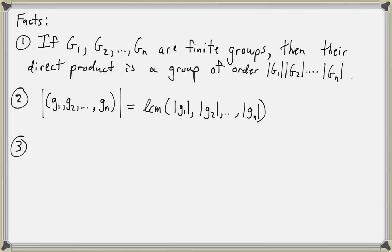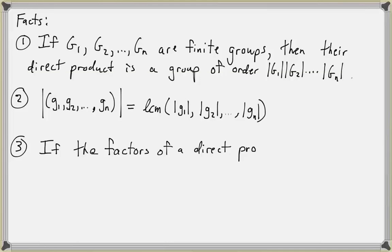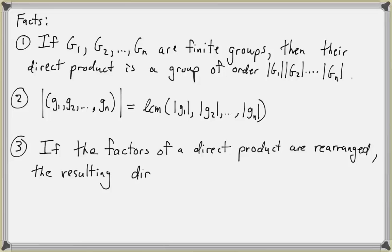The third fact: when we write a direct product of groups, it doesn't really matter what order we write these factors. If the factors of a direct product are rearranged, the resulting direct product is still isomorphic to the original one.